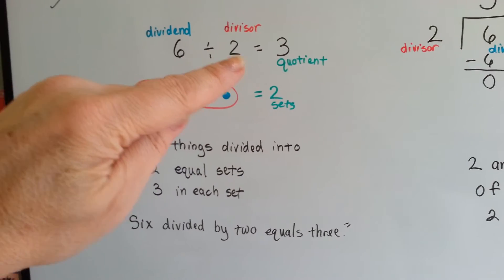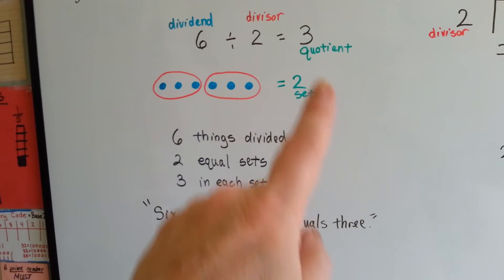The six is the dividend, the two is the divisor, and three is the quotient, the answer.